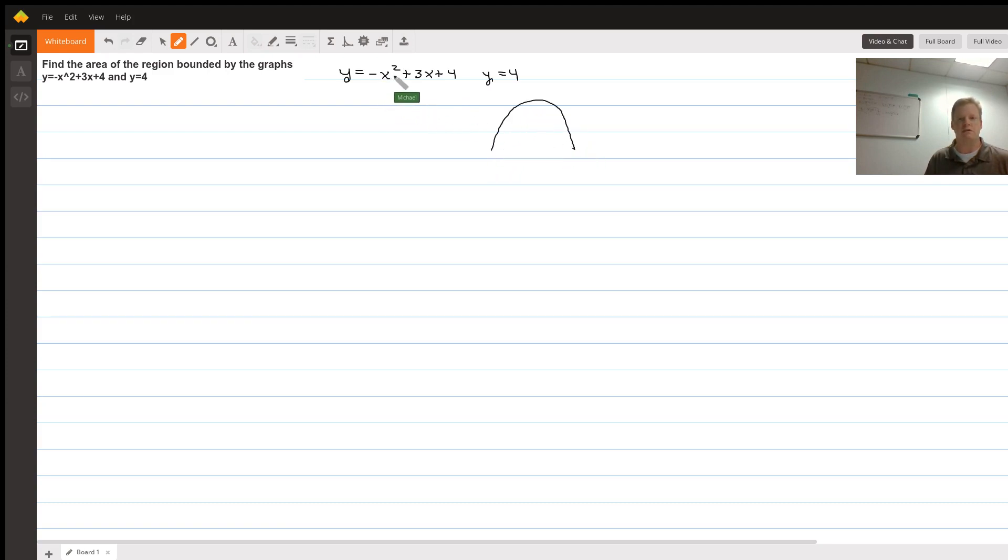To be bounded only by these two curves, the line y equals 4 is going to have to fall below it. Now I need to figure out my limits of integration, which are going to be the points of intersection. To do that I'm going to set the two functions equal to each other.